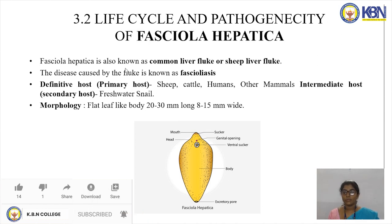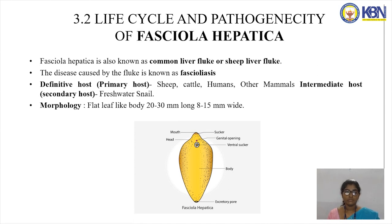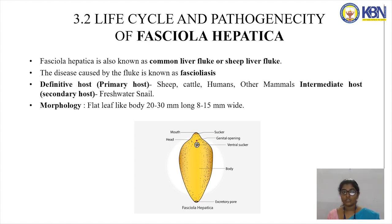Fasciola hepatica is also known as the common liver fluke or sheep liver fluke. The disease caused by the fluke is known as fasciolasis. The definite or primary host is sheep, cattle, humans, and other mammals. The intermediate or secondary host is the freshwater snail. Its morphology is a flat leaf-like body, 20 to 30 mm long and 8 to 15 mm wide.